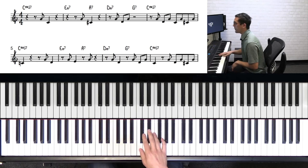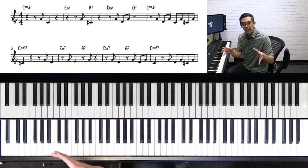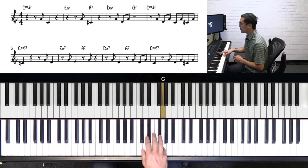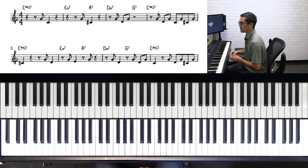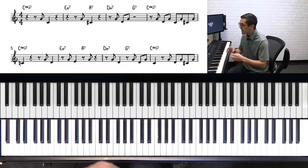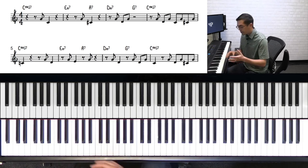And then the last measure, the fourth measure, he kind of combines all of that in one line. Then he ends on a C natural there in measure five. Then he continues the same kind of idea, the same basic rhythm, he's changing one or two notes.